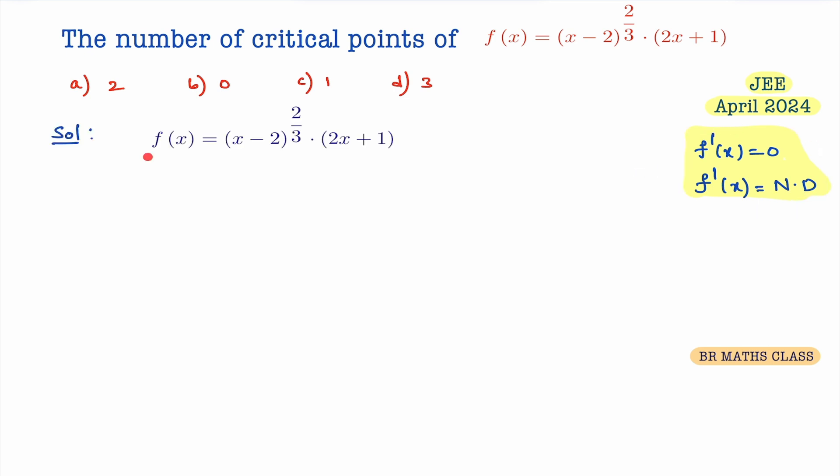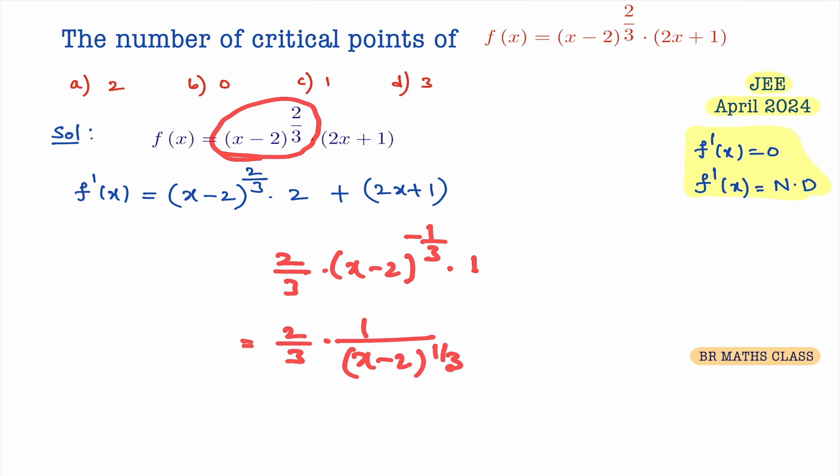First, I will calculate f'(x) and then equate it to 0 to find the critical points. Here, to calculate its derivative, you can observe product of two terms is there. So I will use product rule: u into derivative of 2x plus 1. Derivative of 2x plus 1 is 2, plus 2x plus 1 into derivative of x minus 2 whole power 2 by 3, is 2 by 3 into x minus 2 whole power minus 1 by 3 into derivative of x minus 2 is 1. So its derivative is 2 by 3 into 1 divided by x minus 2 whole power 1 by 3.